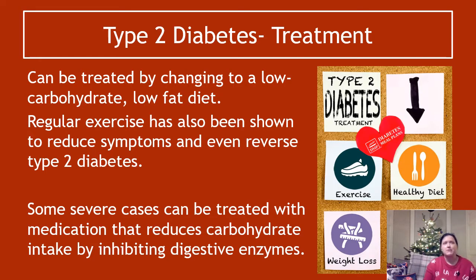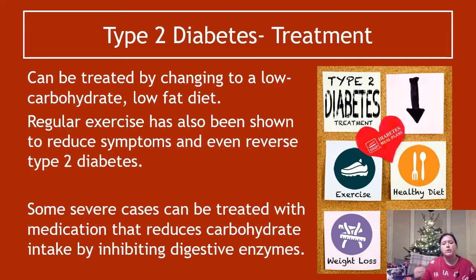The idea is if you're absorbing too much glucose in your small intestine, why not block that entry pathway, meaning your blood glucose shouldn't go as high as often? But that's only used in severe cases.